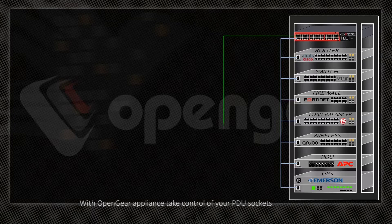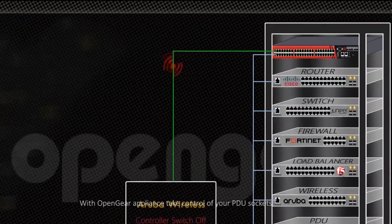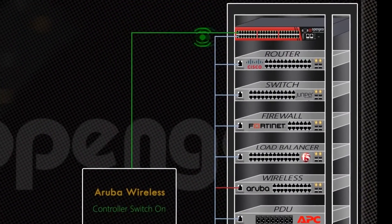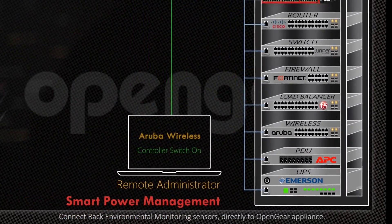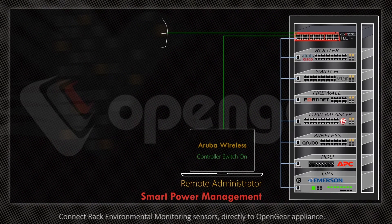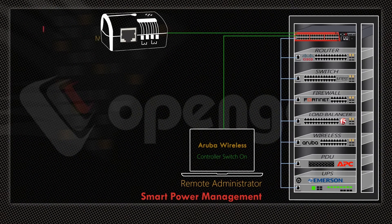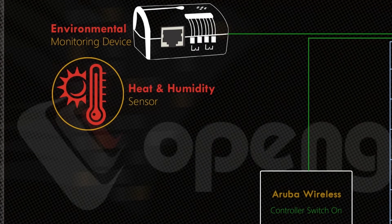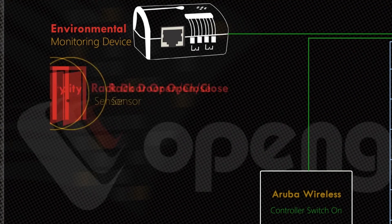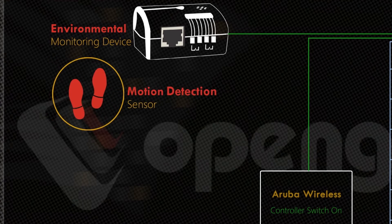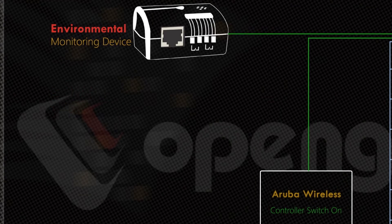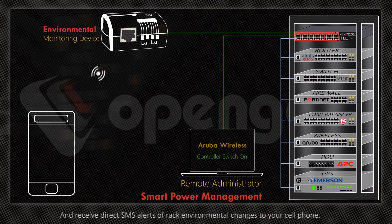With the Open Gear Appliance, take control of your PDU circuits and remotely switch on and off your connected IT equipment. Connect RAC Environmental Monitoring Sensors directly to the Open Gear Appliance — including vibration sensor, heat and humidity sensor, door open/close sensor, motion detection, smoke detection, and water leakage sensor — and receive direct SMS alerts of environmental changes to your cell phone.